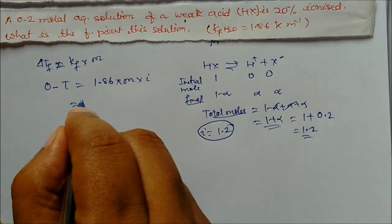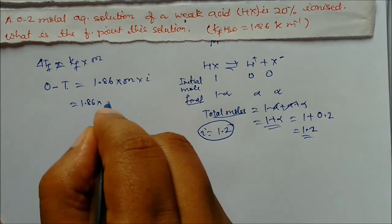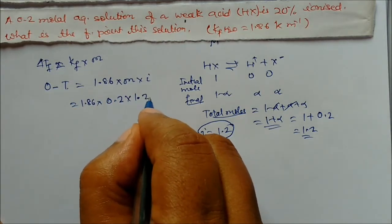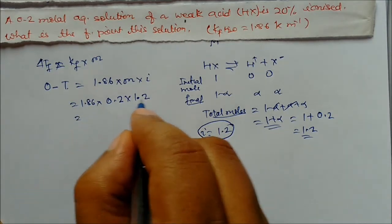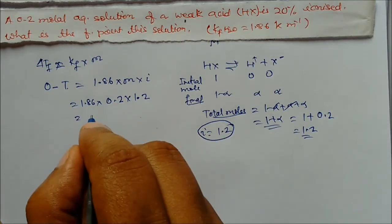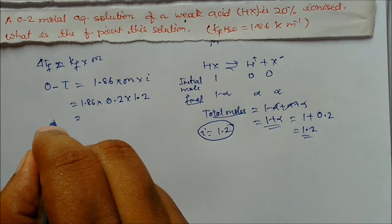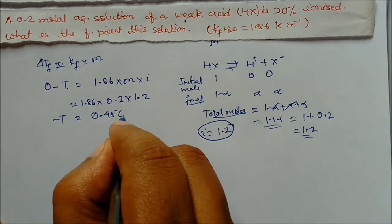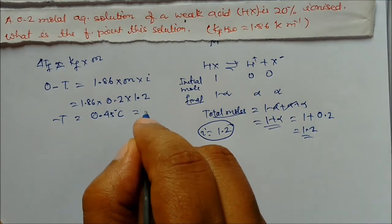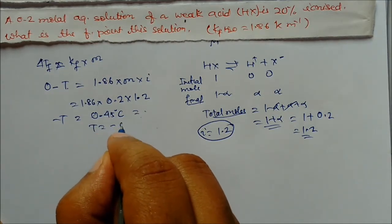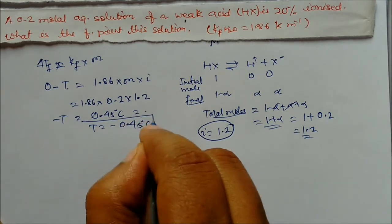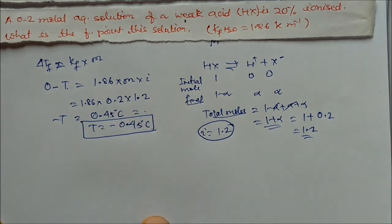Putting it all together: delta Tf = Kf × m × i = 1.86 × 0.2 × 1.2. Solving, we get 0 minus T = 0.45, so the freezing point T = minus 0.45 degree centigrade. This is our value.